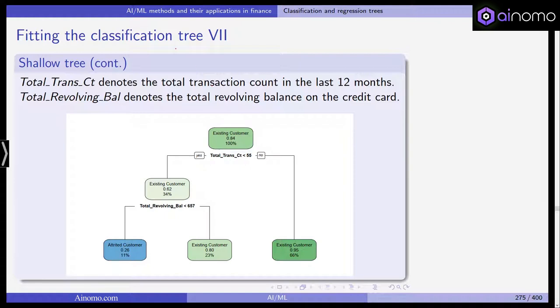These two are quite high up in the tree, but this is where the partitioning stops. That's the whole tree. We have the customer. If the total transaction count is smaller than 55, yes or no, we get a prediction. Here we have attributed customer, existing customer, existing customer. This is the whole tree, quite shallow. That's because we increase the complexity parameter.